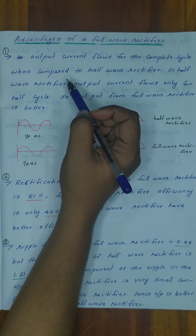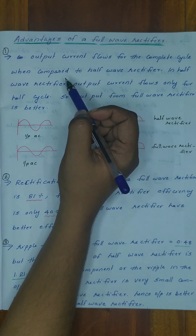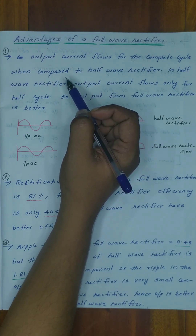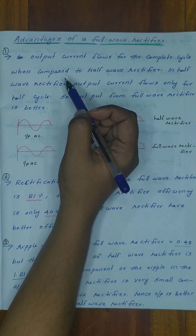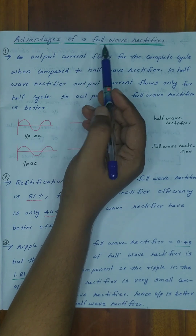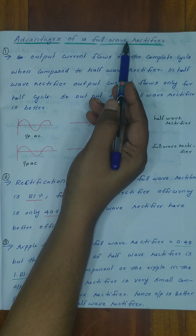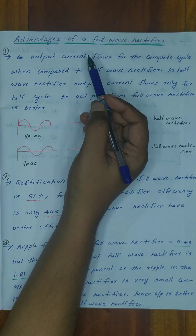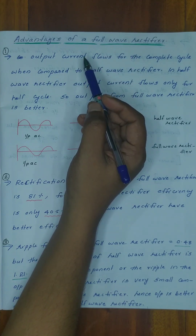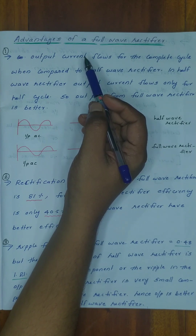We will learn about the half wave rectifier, full wave rectifier, bridge rectifier, center tap rectifier, efficiency, analysis, ripple factor — three things.